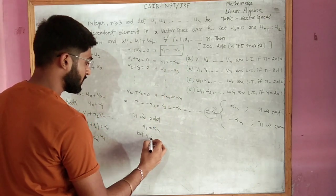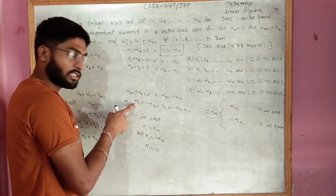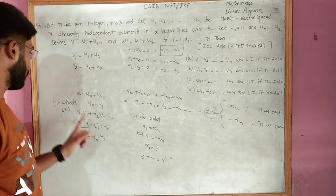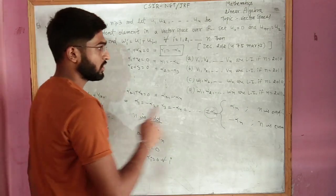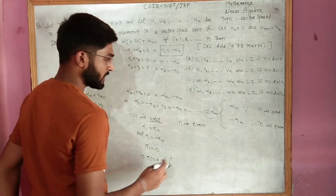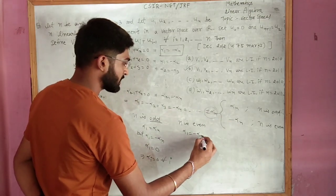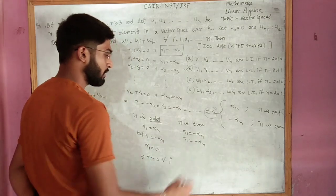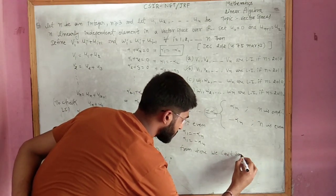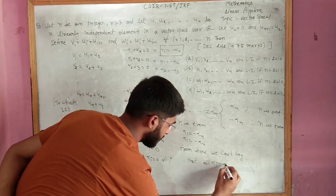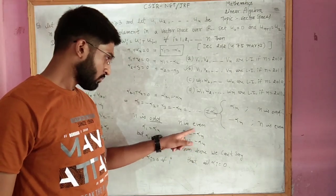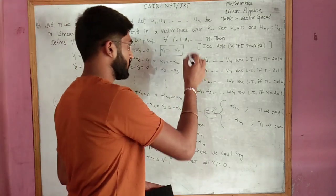If alpha1 = 0, then all other alphai = 0 as well, so v1, ..., vn are LI when n is odd. If n is even, alphaN appears with a negative sign, so both conditions give alpha1 = -alphaN, which is consistent but does not force all alphas to be zero. Therefore we cannot conclude LI for even n. So option B (LI for n odd) is correct.